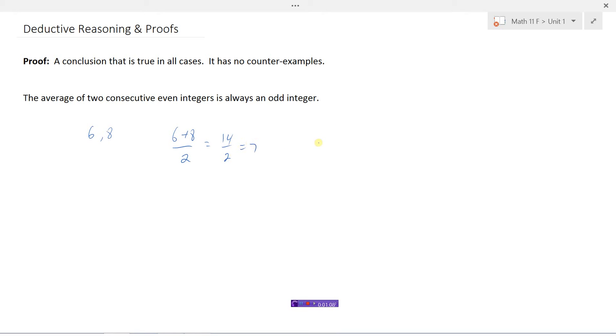Well, that one seems to work. Let's do 24 and 26, which would be consecutive. So 24 plus 26 divided by 2 is 50 divided by 2, which is 25. Yeah, that's an odd integer.